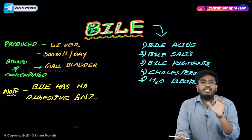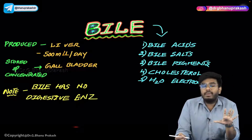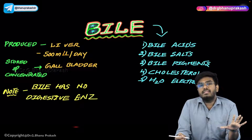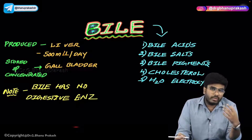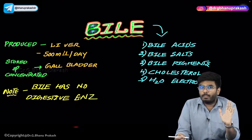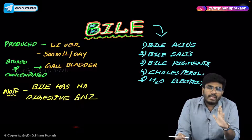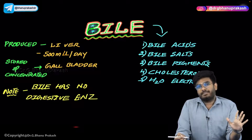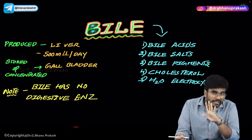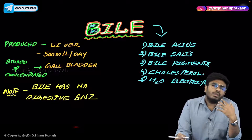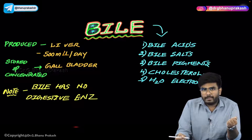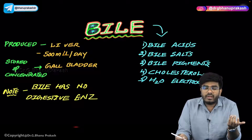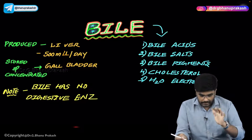Bile does not have any lipases, amylases, or proteases. So bile does not have any digestive enzymes at all. Then what is the role of bile? What is the role of these bile acids, and how are they going to be helpful in the process of digestion?